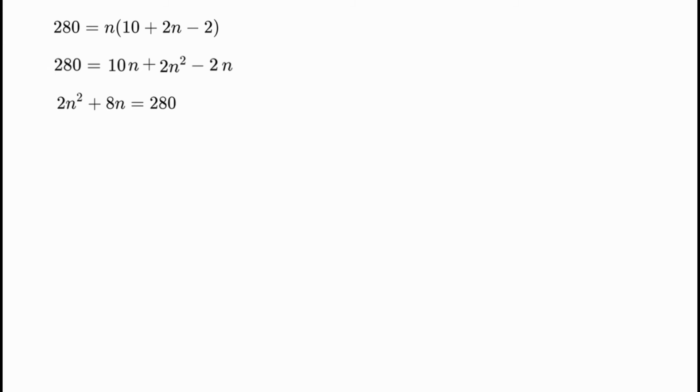We rewrite the equation and divide through by 2, giving n squared plus 4n equals 140, or n squared plus 4n minus 140 equals 0. We will solve this using the splitting the middle term method.